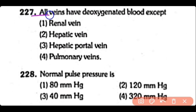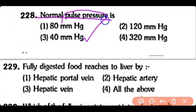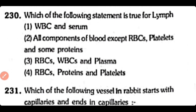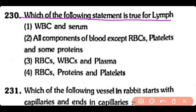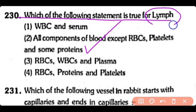Q227. All veins have deoxygenated blood except the pulmonary vein, which contains oxygenated blood. Q228. Normal pulse pressure is 80 mmHg, 120 mmHg, 40 mmHg, or 320 mmHg — correct answer is Option 3 (40 mmHg). Q229. Fully digested food reaches the liver by means of the hepatic portal vein — correct answer is Option 1. Q230. What is true for lymph — it contains white blood cells and serum; or it contains all components of blood except red blood cells, platelets, and some proteins. The correct answer is Option 2.